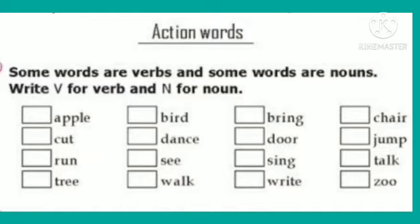The first word is apple. Apple is name of thing and it is noun. Next word is bird. Bird is also a noun. Next word is bring. Bring is not a noun — it is a verb.